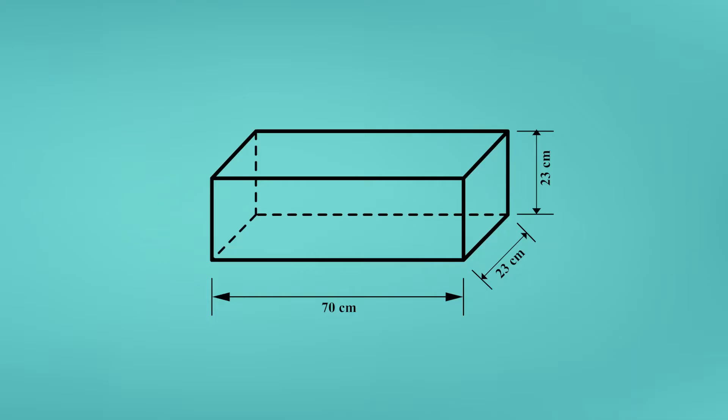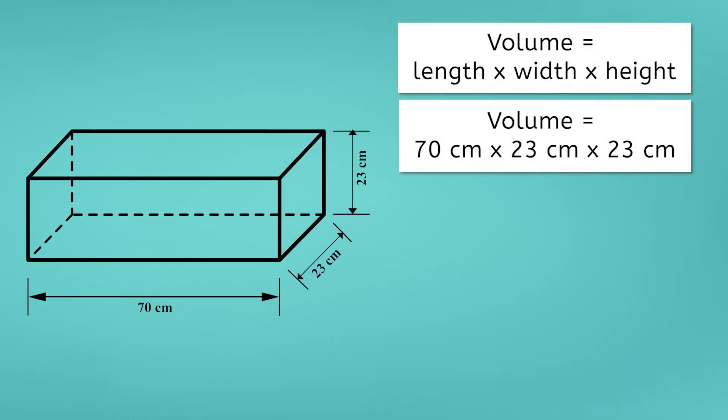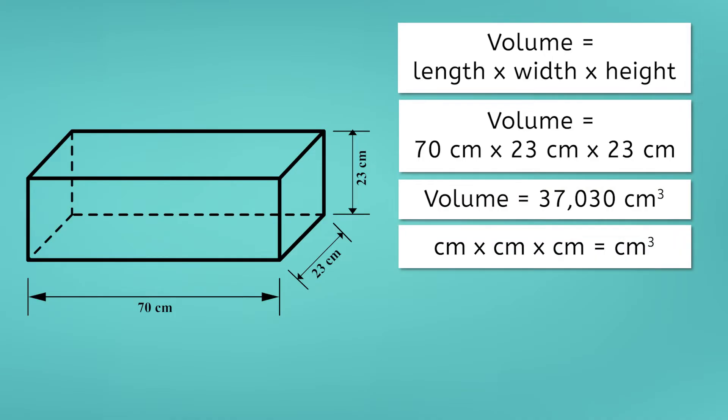In this prism, the length is 70 centimeters, the width is 23 centimeters, and the height is 23 centimeters. To find the volume, you would multiply 70 times 23 times 23, and you would get a volume of 37,030. If you look closely at the units, you have centimeters times centimeters times centimeters. And if you think back to your math class, anything multiplied by itself three times is called cubed. So the units would be centimeters cubed.